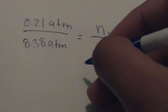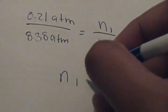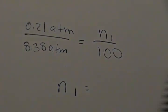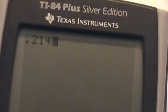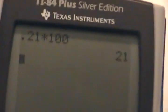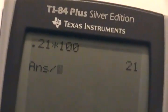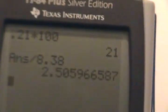So if we solve for n1, we get 0.21 times 100 divided by 8.38, which equals 2.5 mole percent.